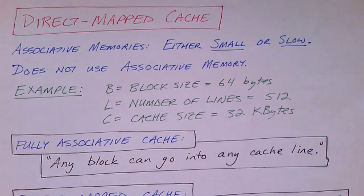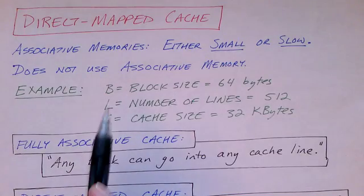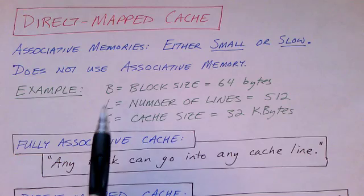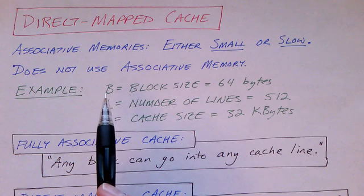So, there's another approach, which is called direct map cache, and these caches do not use associative memory principles. So let's start by looking at an example of a direct map cache.